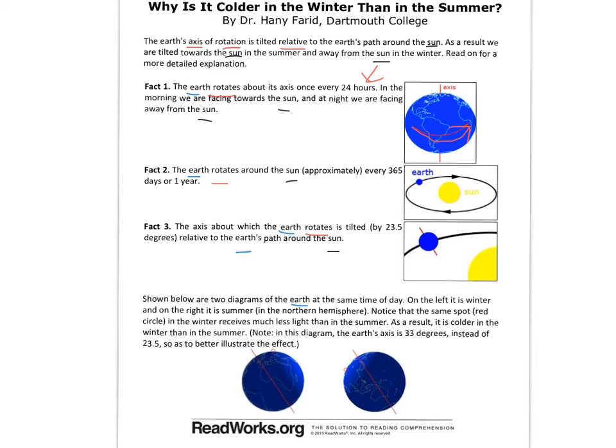So we're going to see the sun, then we're going to see darkness and the moon. In the morning, we're facing towards the sun — the sun rises in the east — and at night, we are facing away from the sun. Fact two: the earth rotates around the sun approximately every 365 days, or one year. Fact three: the axis about which the earth rotates is tilted by 23.5 degrees relative to the earth's path around the sun.